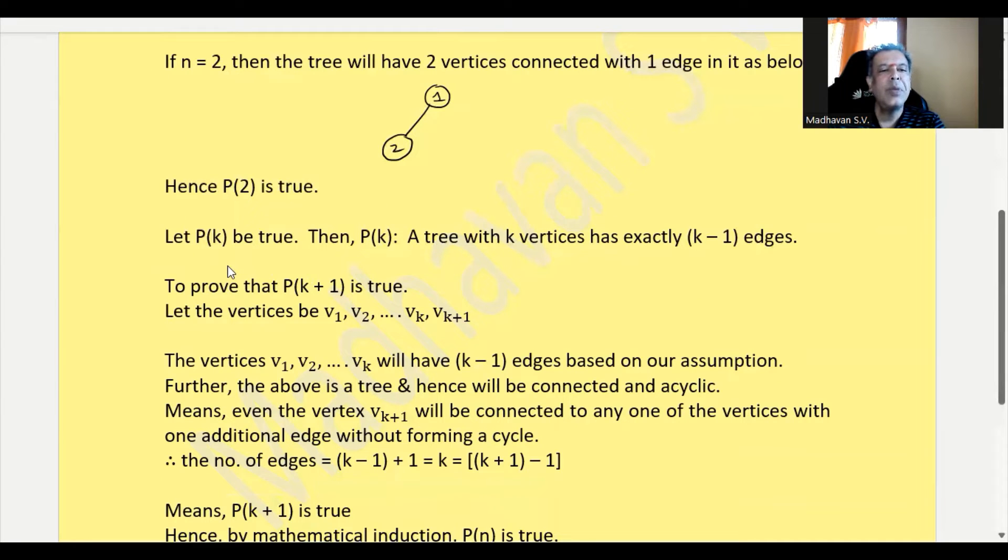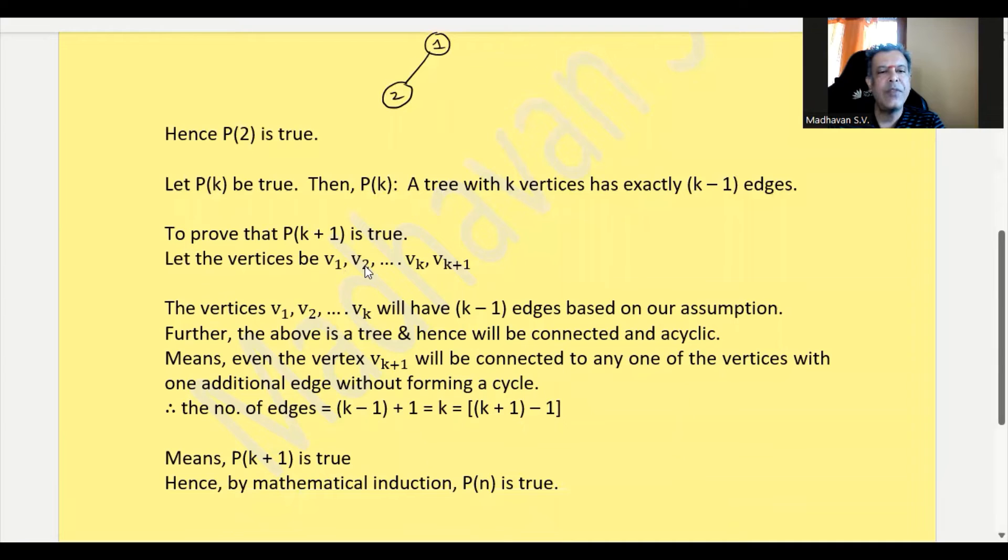Now what we need to prove is P of k plus 1 is true. Let us consider the vertices to be V1, V2 and so on up to Vk, comma Vk plus 1. Here, the vertices V1 to Vk will have definitely k minus 1 edges based on our assumption, that is P of k assumption.